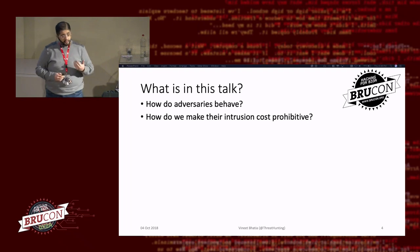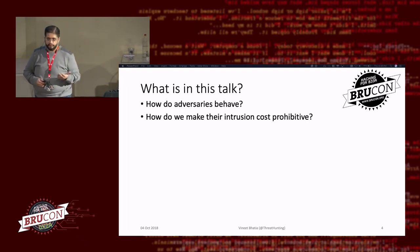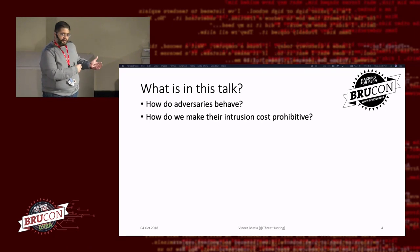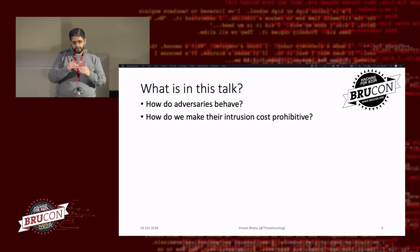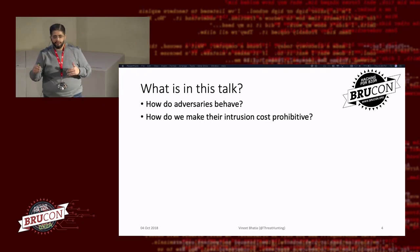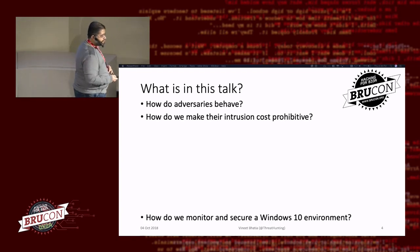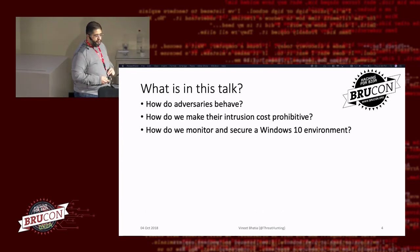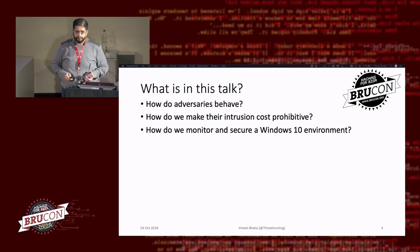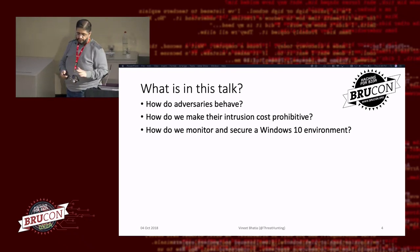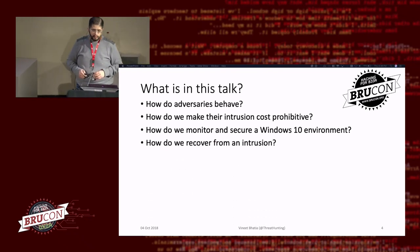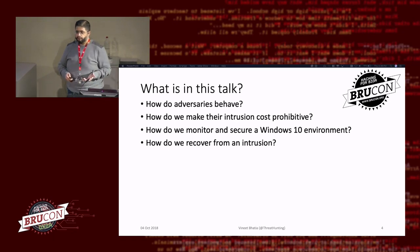An attacker knows the cost of the infiltration. They're always holding back the advanced techniques for a much more competent adversary, and they're trying to determine the lowest threshold to cross to get into your network. So what is the cost to an adversary? How do we monitor and secure a Windows 10 environment using native capabilities, out of the box, without installing any bloated endpoints? And finally, how do you recover from an intrusion?